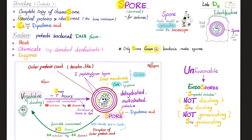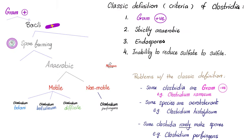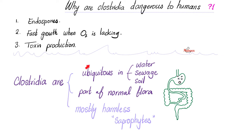What's a spore? Structure-wise: calcium dipicolinic acid and others. Function-wise: to protect the bacteria from unfavorable conditions. What's the classic definition of Clostridium? Gram-positive, strictly anaerobic organism. Can they make spores? Yes. Can they reduce sulfate to sulfite? No. Why do we fear Clostridium? Because they are everywhere around us, because they can make spores, they can produce toxins, and they can grow in anaerobic conditions.